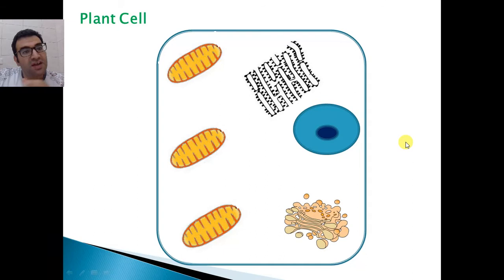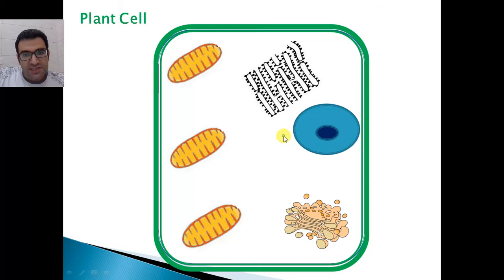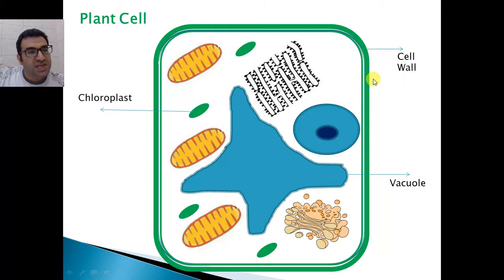Also, we have extra organelles. Here, as you can see, we have more organelles. We have the cell wall - an extra membrane outer to the cell membrane. It plays a role in protection and determining the shape of the cell.